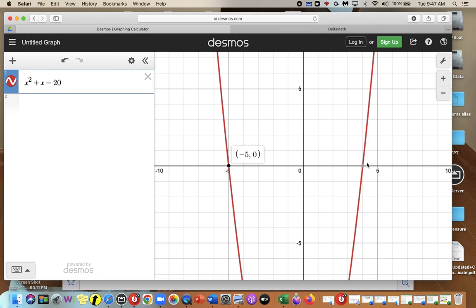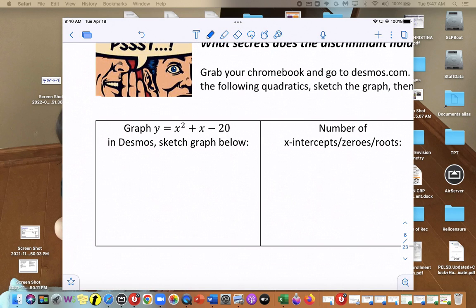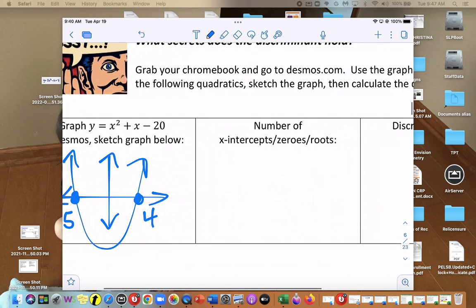We can see that there are two solutions at negative 5 and at 4. So let's sketch that. There are two answers.